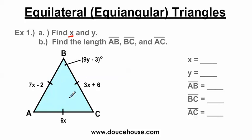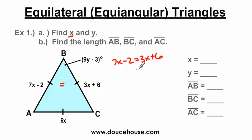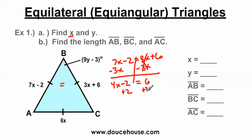I know that these sides are congruent to each other. I can just pick any two sides and set them equal to each other. I'm going to set these two across from each other equal and solve for X. Getting the X's on one side, I have 4X minus 2 equals 6. Adding 2 to both sides gives me 4X equals 8. Dividing both sides by 4, I get X is equal to 2.